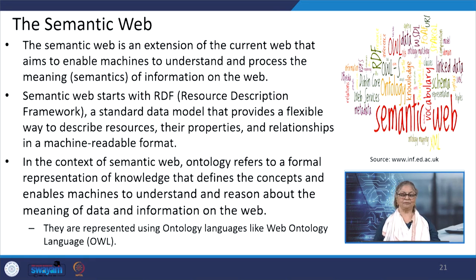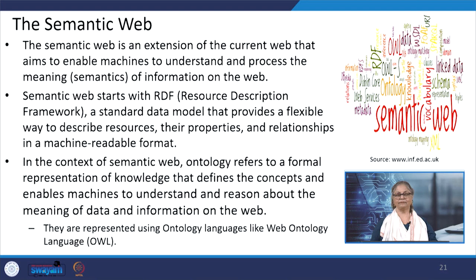In the context of the semantic web, ontology refers to a formal representation of knowledge that defines the concepts and enables machines to understand and reason about the meaning of data and information on the web. Let us listen to a video about the semantic web to have a clearer idea. The video is a one-minute series on YouTube whose content mainly focuses on Web 3.0, metaverse, blockchain, and machine learning, explaining the goal and benefits of the semantic web.